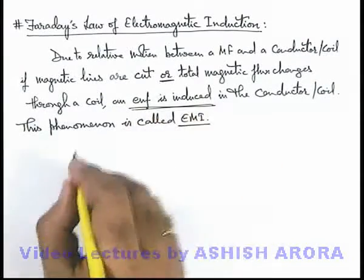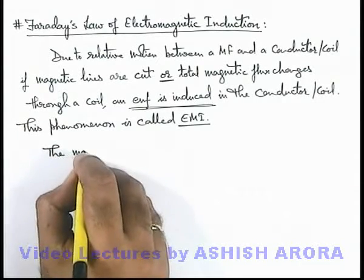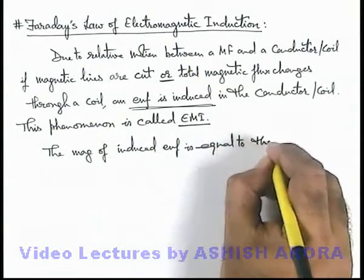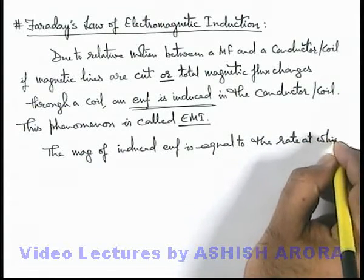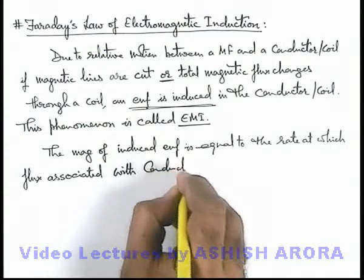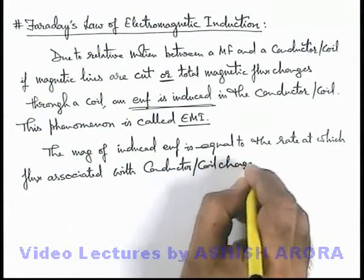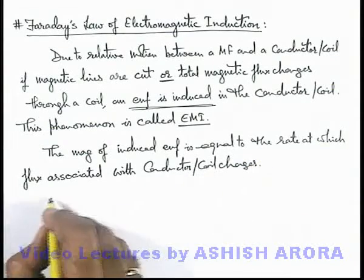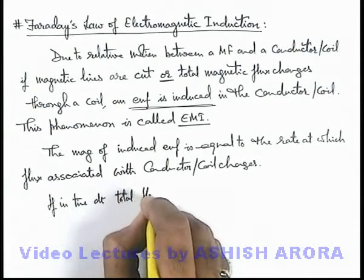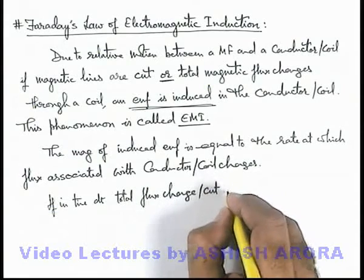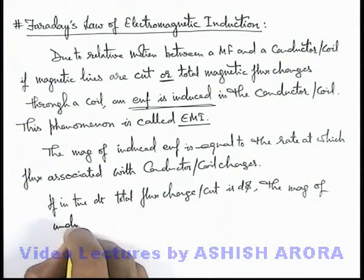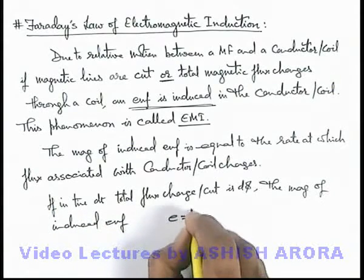We can also state about this induced EMF — that's important here — that the magnitude of induced EMF is equal to the rate at which flux associated with the conductor or coil changes, or the rate at which flux is cut. Mathematically, if in time dt the total flux change or cut by the conductor or coil is dΦ, then the magnitude of induced EMF E equals mod of dΦ/dt.